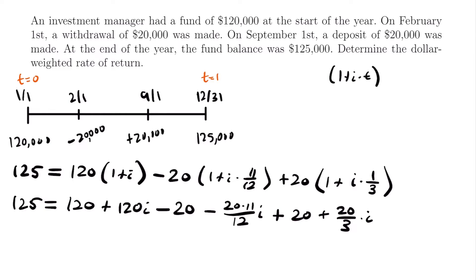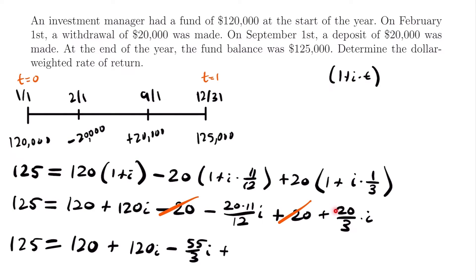Now we add up like terms. The constant terms: 120 − 20 + 20 = 120 (the −20 and +20 cancel). For the i terms: 120i − (55/3)i + (20/3)i. Since 20·11/12 = 220/12 = 55/3, and combining −55/3 + 20/3 = −35/3, we get: 125 = 120 + (120 − 35/3)i, which simplifies to 5 = (360/3 − 35/3)i = (325/3)i.